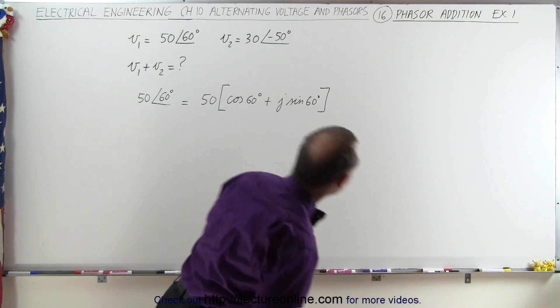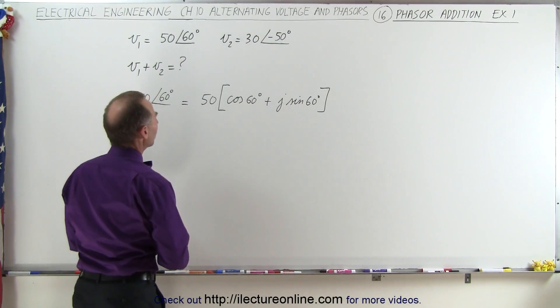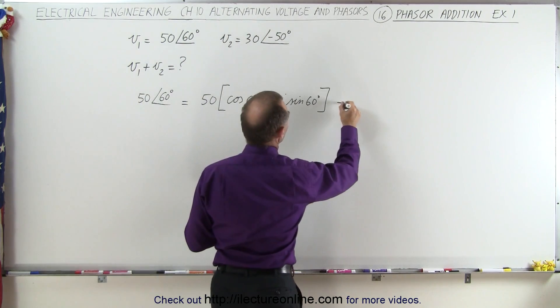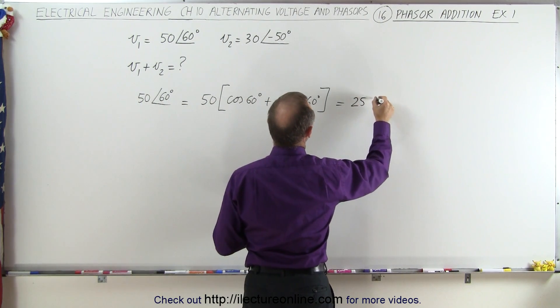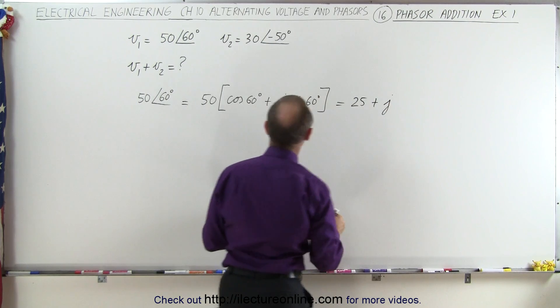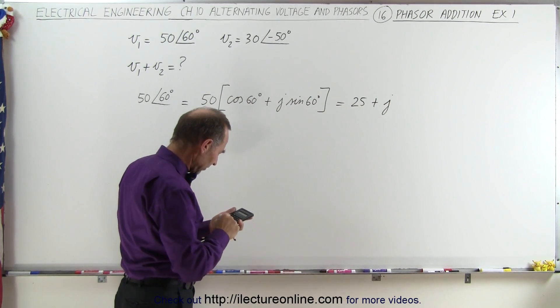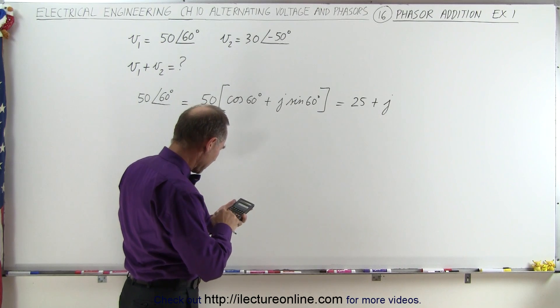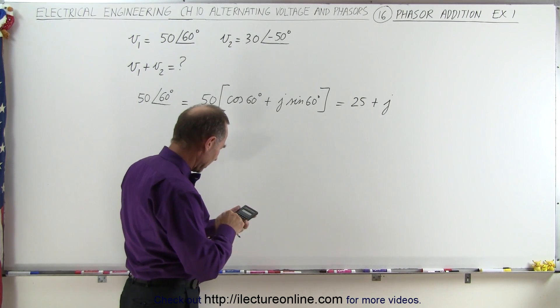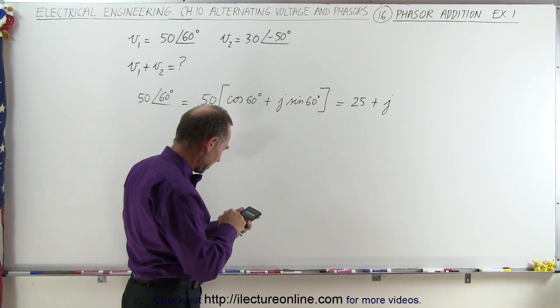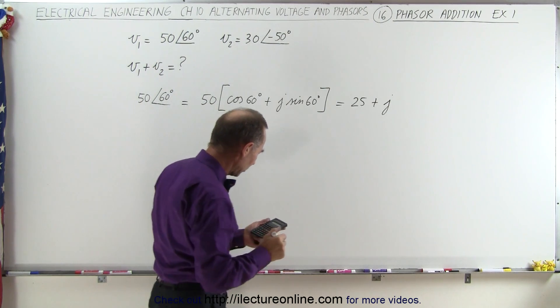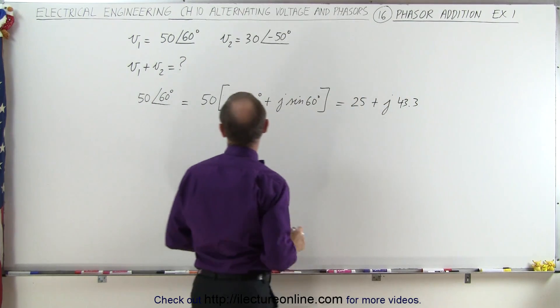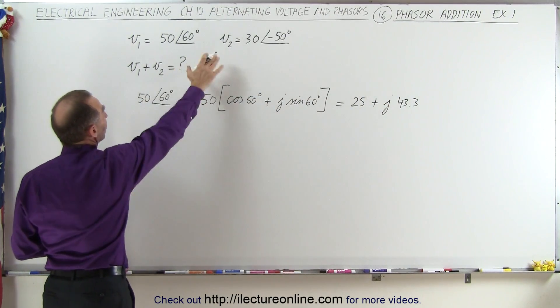The cosine of 60 is one half, so this becomes equal to 25 plus j times the sine of 60. The sine of 60 is 0.866 times 50, that would be 43.3. Now we do the same for the second voltage.